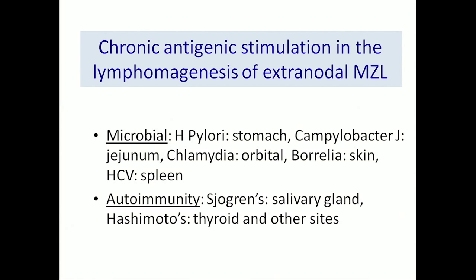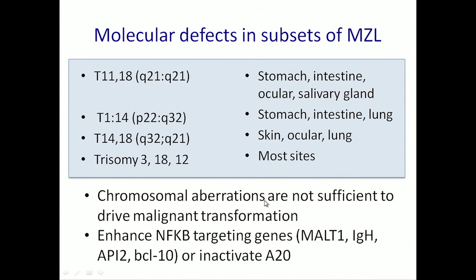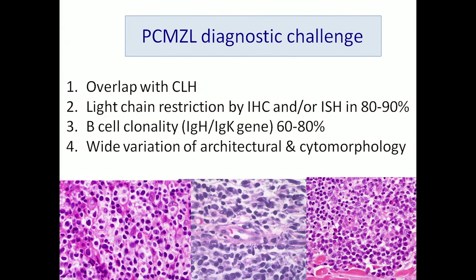All extranodal MZLs, whether cutaneous or not, are driven by chronic antigenic stimulation — could be microbial, like H. pylori in the stomach, campylobacter in the jejunum, chlamydial orbital infections, Borrelia in the skin (more in Europe), or hepatitis C. We always look for autoimmunity, especially Hashimoto's and Sjögren's. They often also have molecular defects with translocations that are site-specific. These chromosomal aberrations are not sufficient alone to drive malignancy — they fuel the chronic antigenic stimulation — and without that chronic antigenic stimulation, it's difficult to reach this diagnosis.